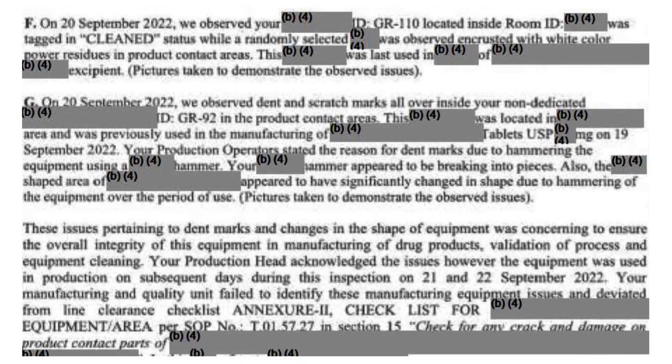Example number five: auditors stated that your manufacturing unit and quality unit failed to identify equipment defects and deviated from the written procedure related to equipment line clearance. As per the equipment line clearance checklist, one checkpoint is related to checking and verifying equipment parts for any kind of cracks or damage.